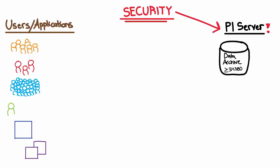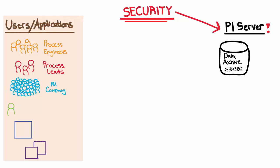At your organization, you have different groups of users who interact with the PI System. For example, maybe you have a group that's your process engineers, and maybe there are a few individuals that are actually responsible for leading the process engineering team. You also might have applications that read data from the PI System, like PI Coresight, or write data to it, like PI Interfaces.